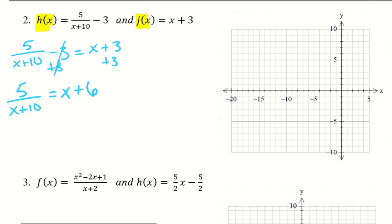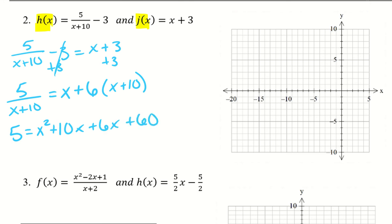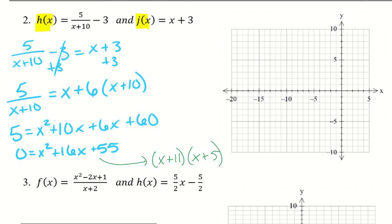Multiplying both sides by x plus 10 gives 5 equals x squared plus 10x plus 6x plus 60. Moving the 5 over and combining like terms: 0 equals x squared plus 16x plus 55. Factoring gives x plus 11 and x plus 5, since 11 times 5 equals 55 and 11 plus 5 equals 16. So my two x values are negative 11 and negative 5.